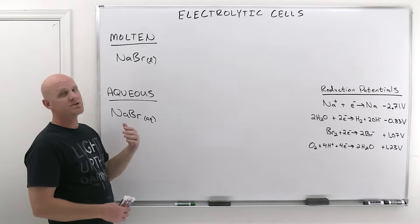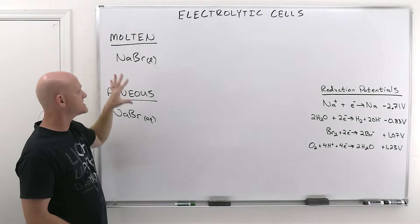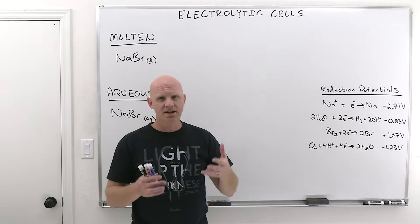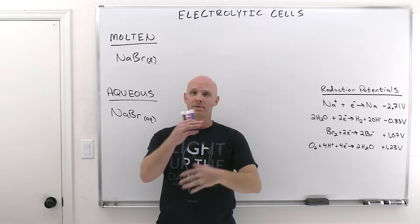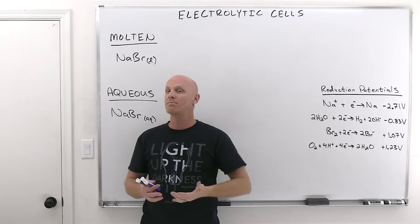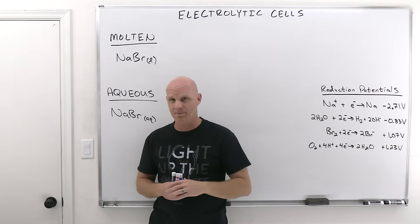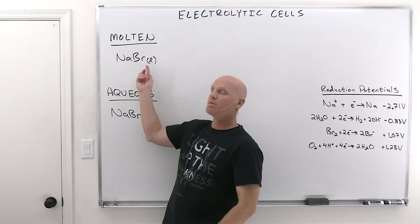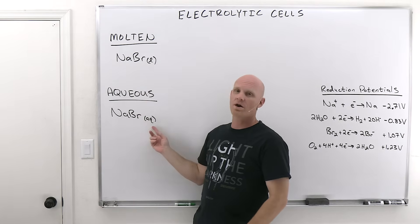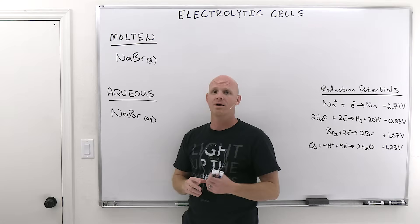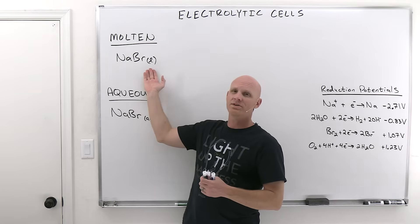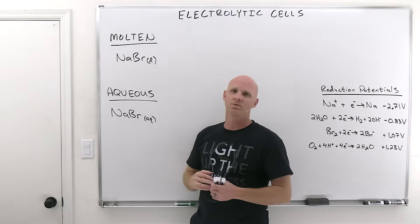It turns out there are two types of electrolysis: molten electrolysis and aqueous electrolysis. To do electrolysis, you need the cations and anions to be able to be mobile — they need to be able to move around. That's not possible in a solid ionic compound, but it is possible if you melt it, making it a liquid, or if you dissolve it in water, assuming it is a soluble ionic compound.